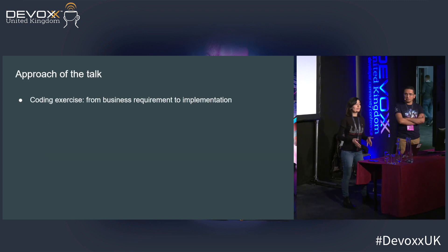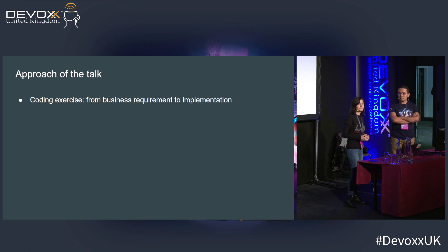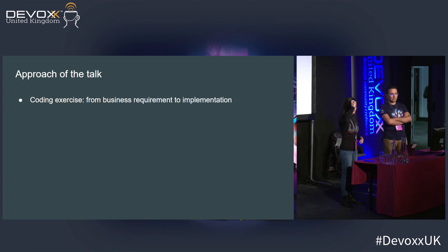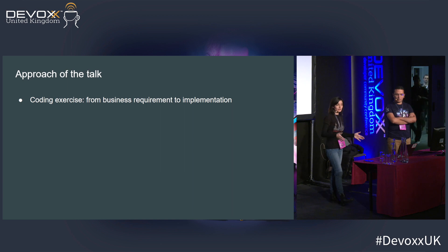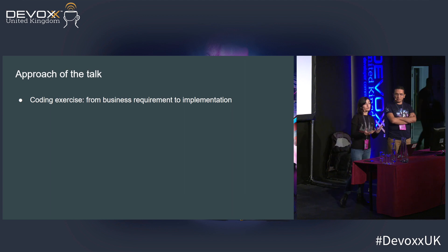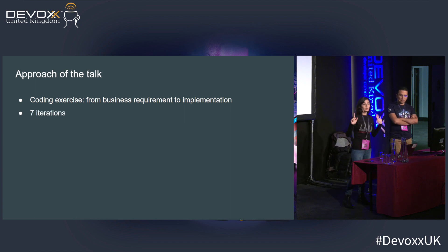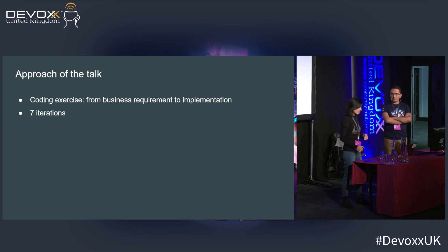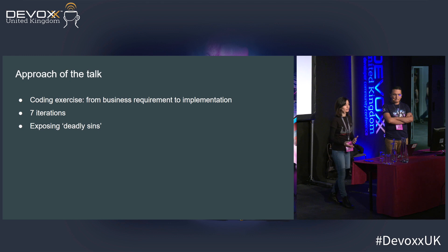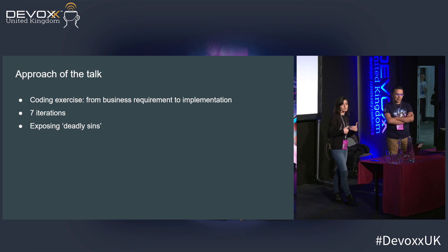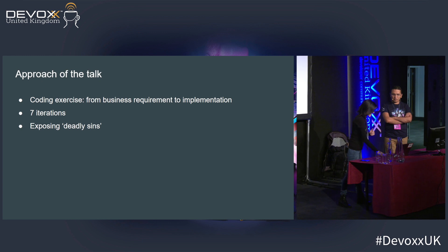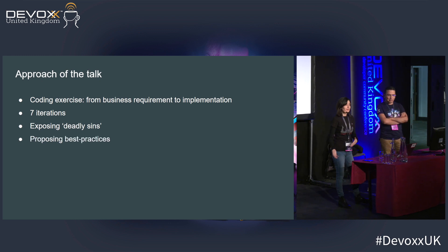In this talk we're going to be doing a coding exercise. Taufik and I are going to work through code snippets in the slides, going from a business requirement all the way to a prototype implementation. The business requirement is loosely based on finance. We're going to do seven iterations, and in each iteration we'll be exposing some deadly sins or pitfalls or mistakes in concurrency — things we have seen, very pragmatic and hands-on. And we'll be proposing best practices to deal with those pitfalls or avoid them altogether.